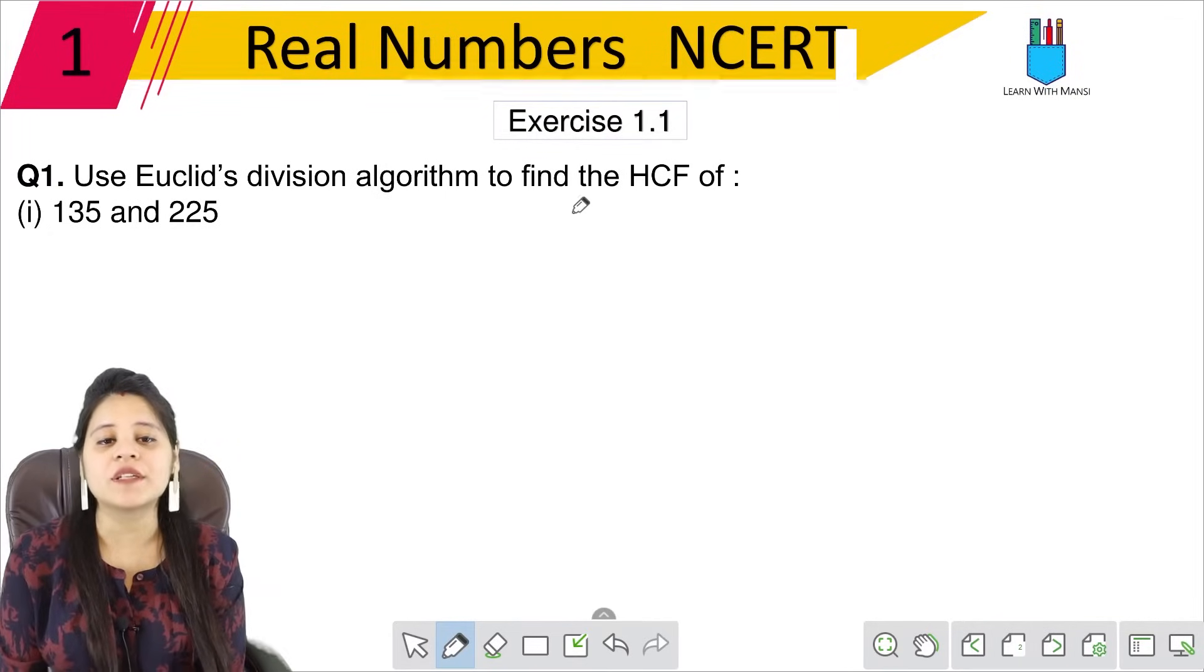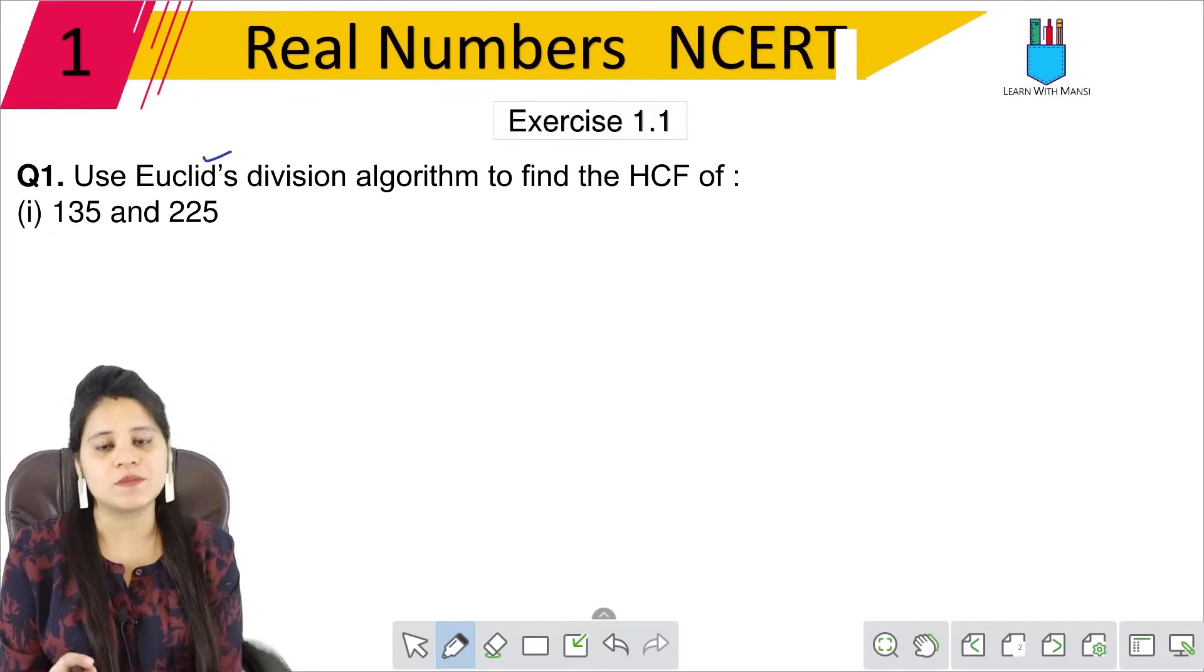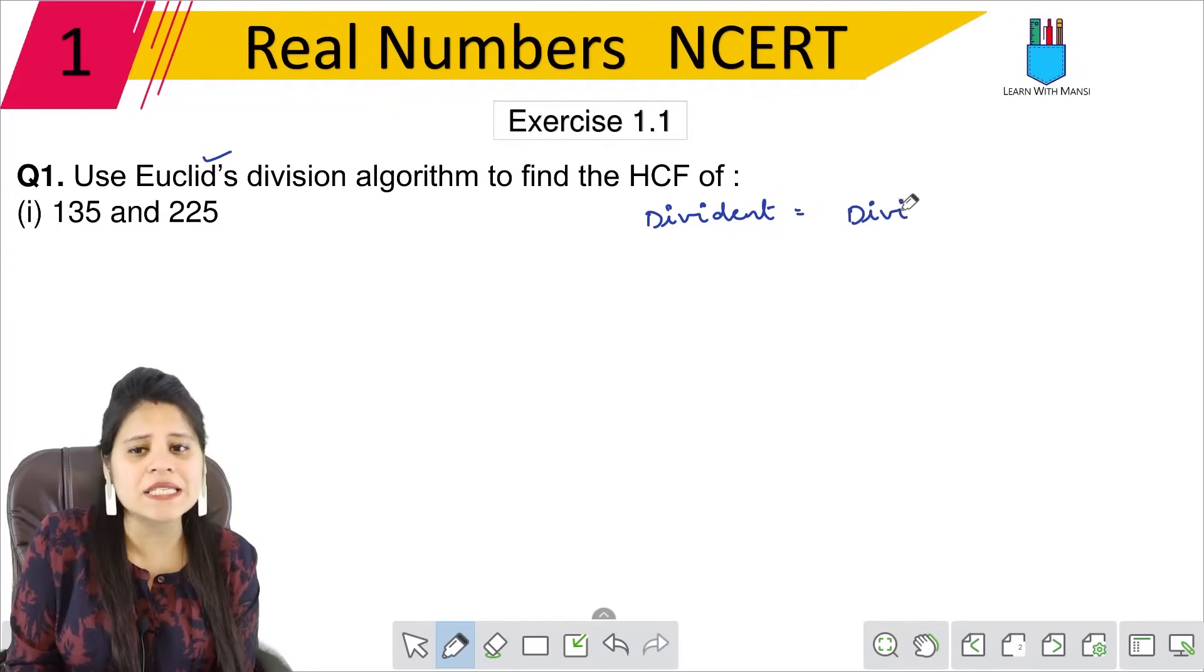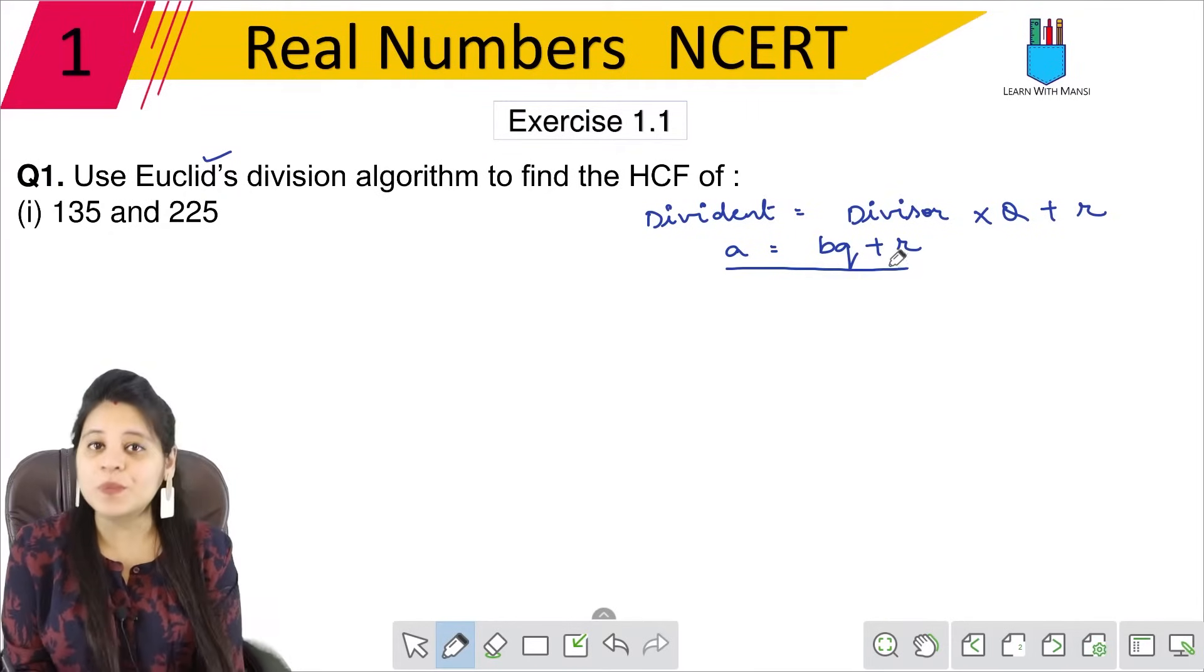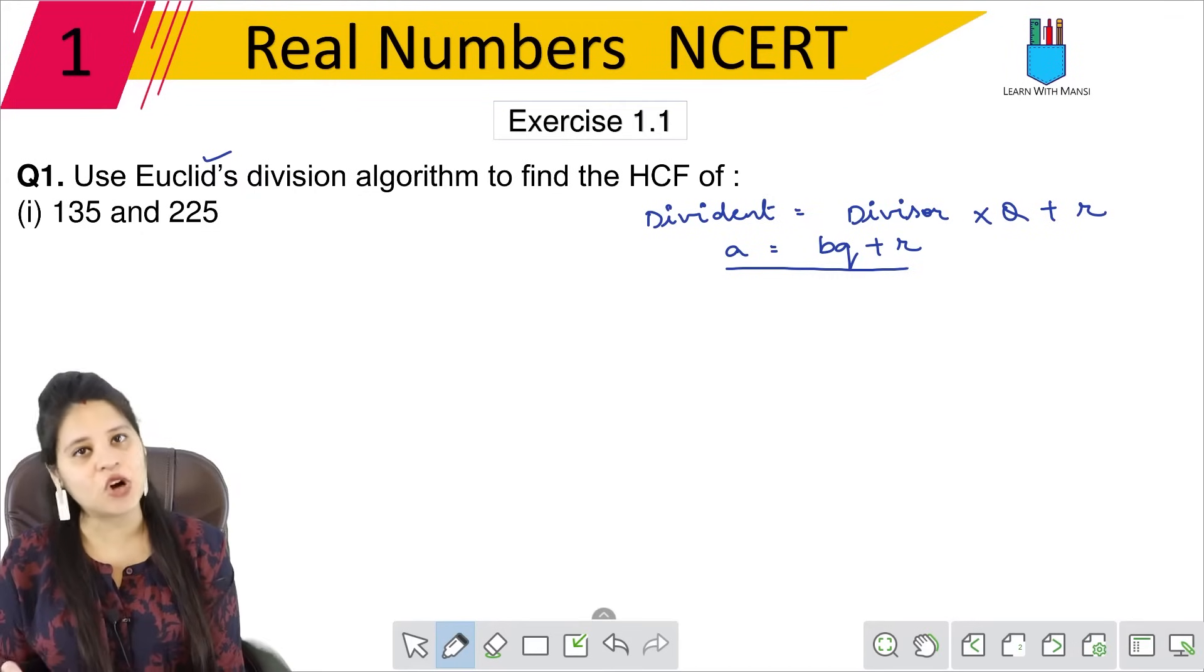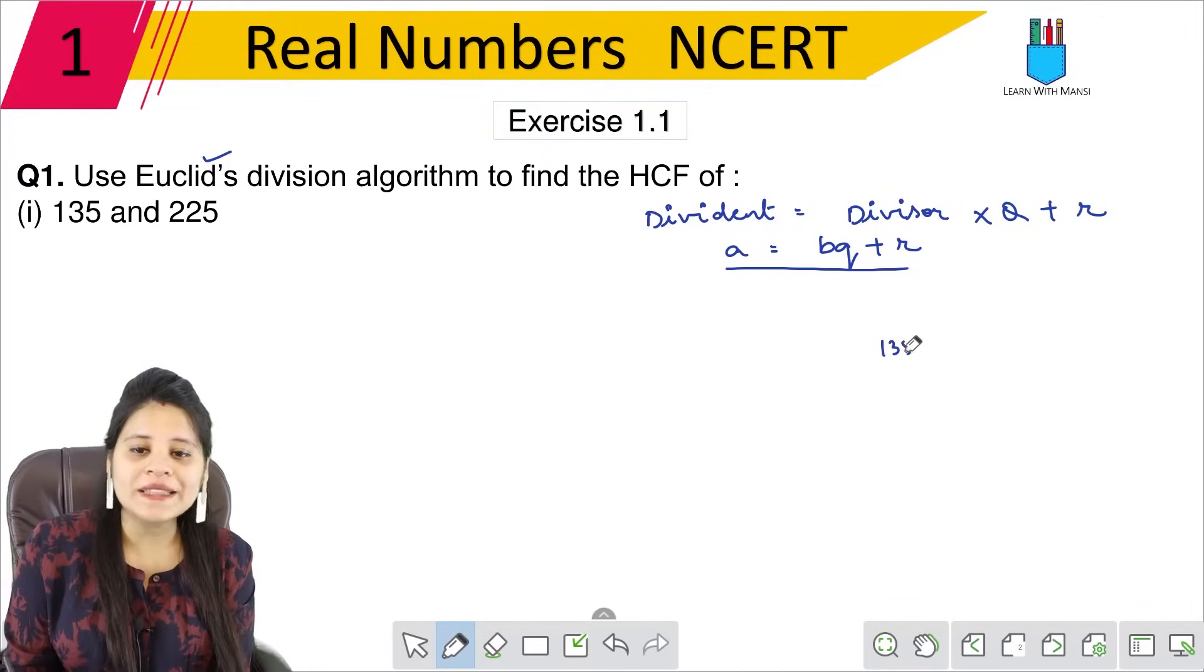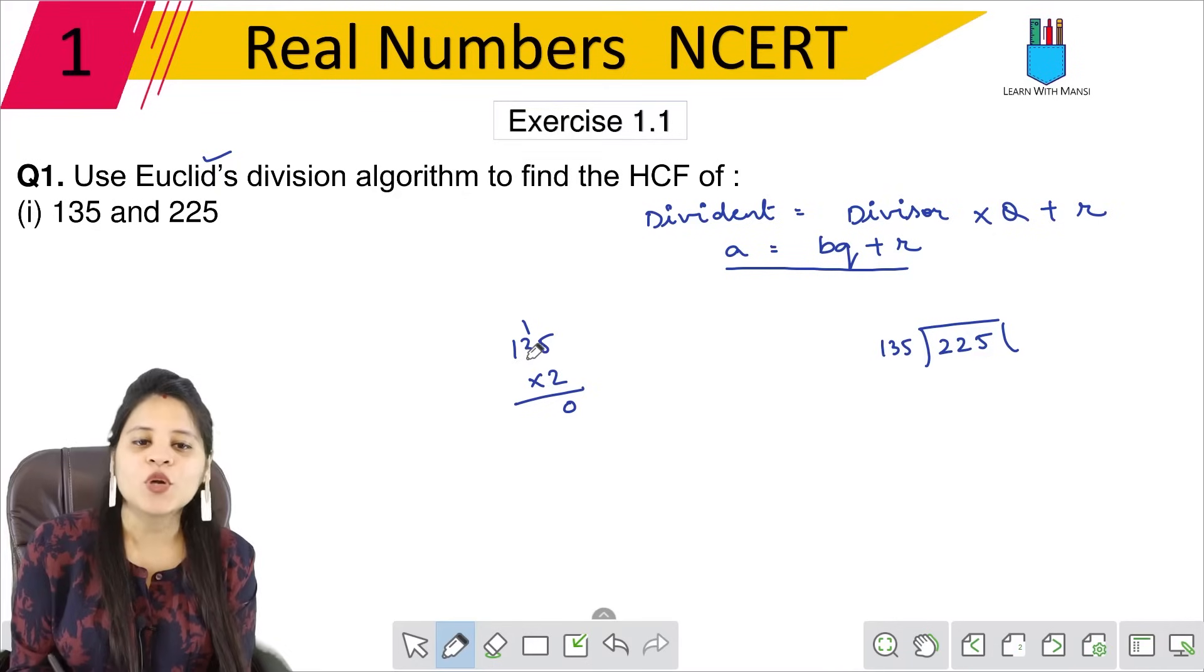Use Euclid's division algorithm to find the HCF of 135 and 225. So we know that our dividend is equal to divisor into quotient plus remainder. We can write it as A equals to BQ plus R. This is the form which Euclid's division algorithm says. 135 is small, so we divide 135 from 225.